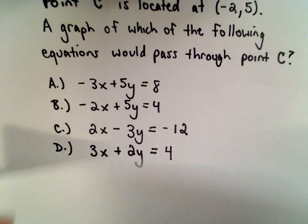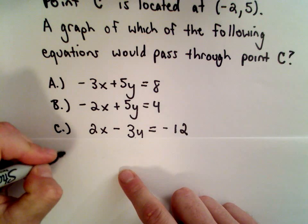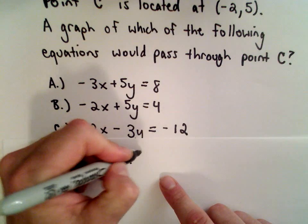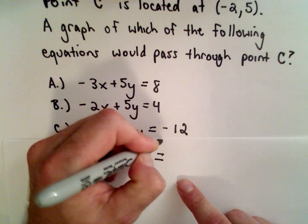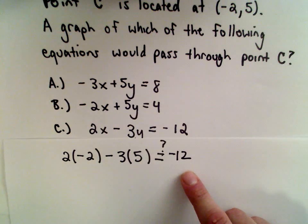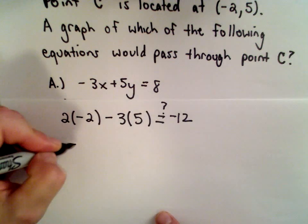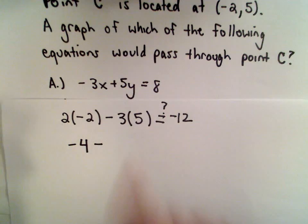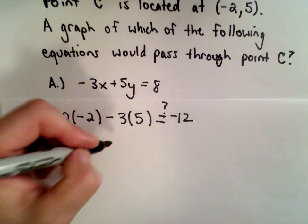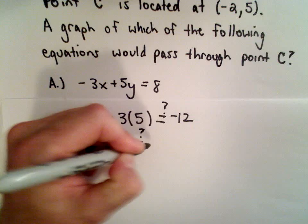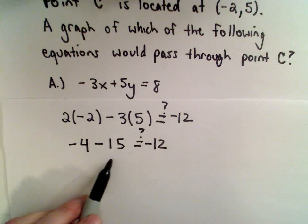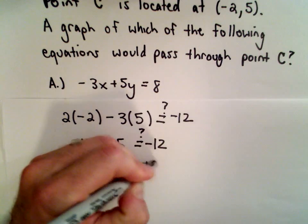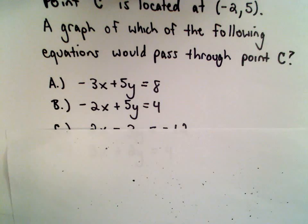Let's look at C here. We would have 2 multiplied by -2, minus 3 multiplied by 5. Does this equal -12? Well, 2 multiplied by -2, that's -4. -3 multiplied by 5, that's a negative multiplied by a positive, which is going to be a negative. 3 times 5 is 15. -4 minus 15, that's -19. No, -19 is not the same as -12. So choice C doesn't work.